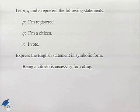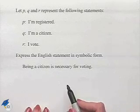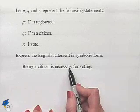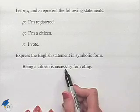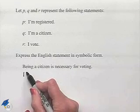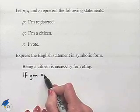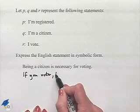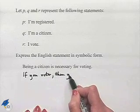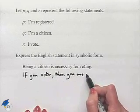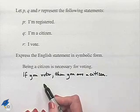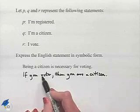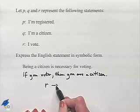Being a citizen is necessary for voting. The necessary part becomes the part of the conditional that follows the if-then statement, so we change this into: if you vote, then you are a citizen. We can then write it in symbolic format as R then Q.